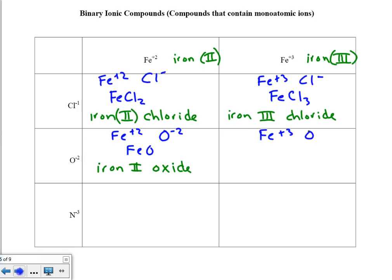Fe⁺³ and O⁻². Crisscrossing, we get Fe₂O₃. This is iron 3 oxide. Here's a good example of where you don't want to get confused: iron 3 doesn't tell you how many irons there are. The Roman numeral 3 tells you that the charge is a plus 3. It does not tell you how many irons are needed to make the compound neutral.